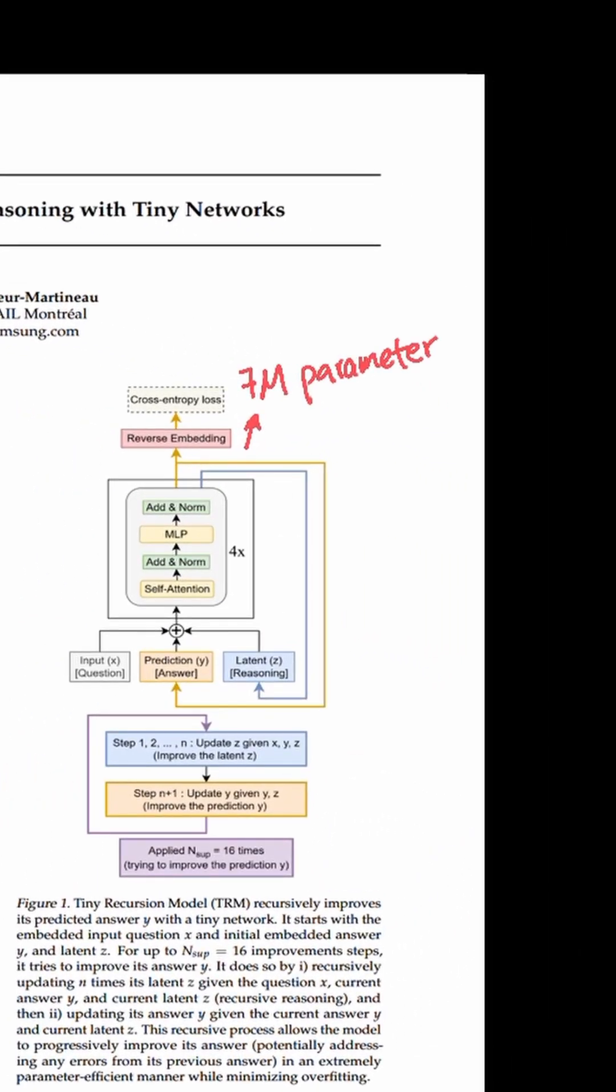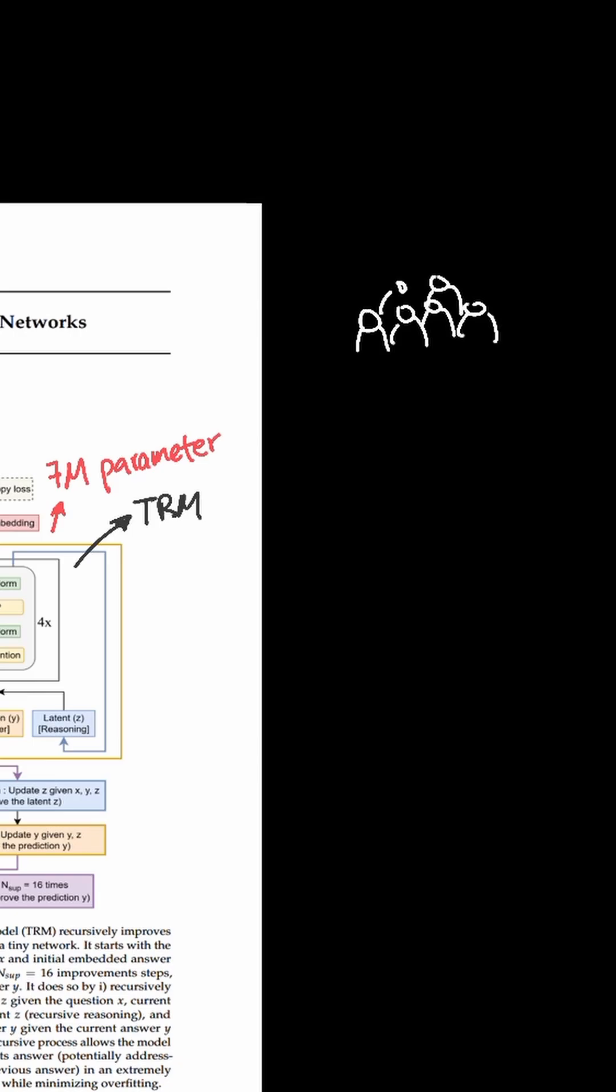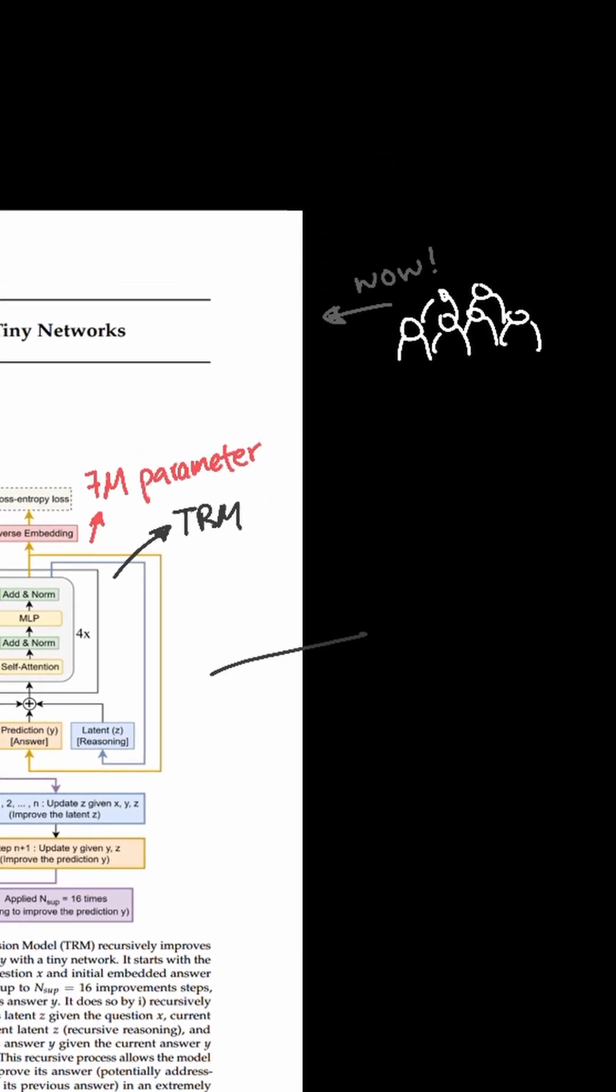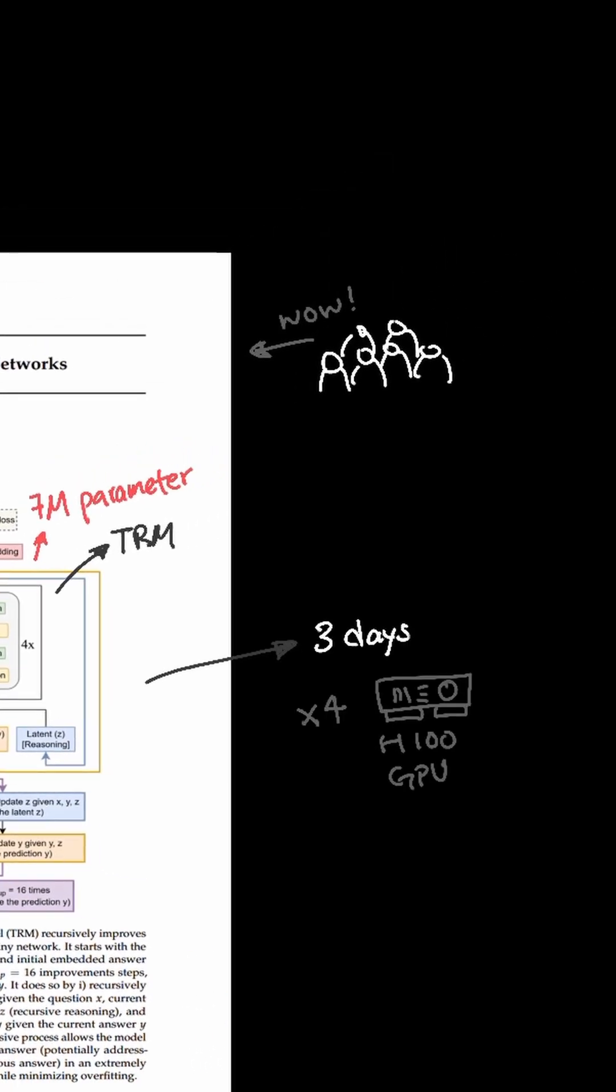Can you train an AI model in less than three days? This is a 7 million parameter model called TRM. And it's making a huge noise in the industry because the model only takes three days to train using four H100 GPUs.